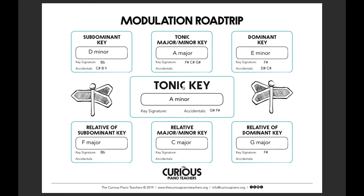Coming down to the relative subdominant, we're looking for F major, and at this point we're definitely looking for that B flat to come out. Then in the middle segment we have the relative major or minor, which in this case is C major — and for C major we'd be looking for no accidentals at all. Finally, we're looking for the tonic major or minor, which in this case is A major, so we'd be looking out for F sharp, C sharp, and G sharp. It's that addition of the C sharp that would really give us the feeling that yes, we are in A major.